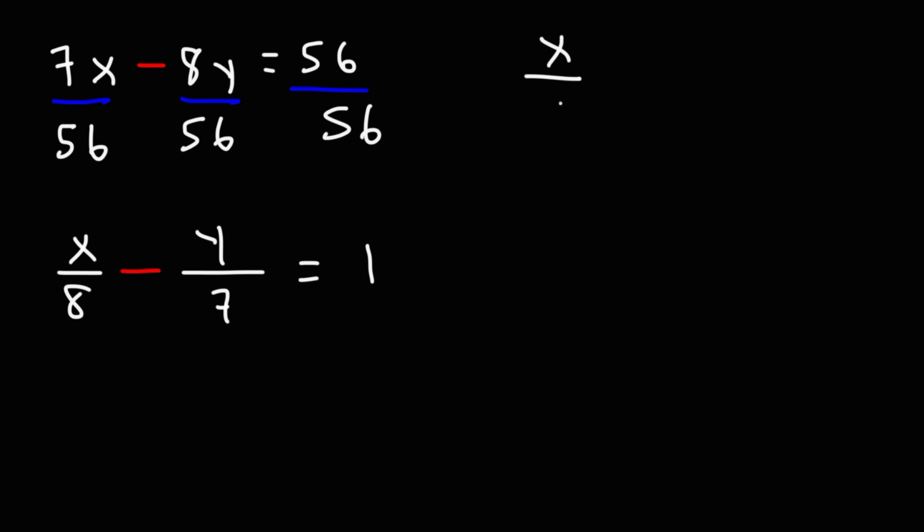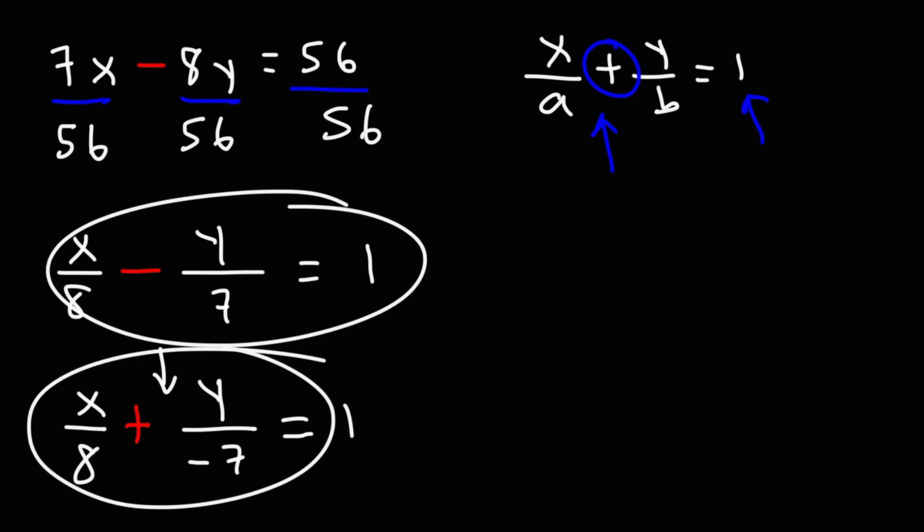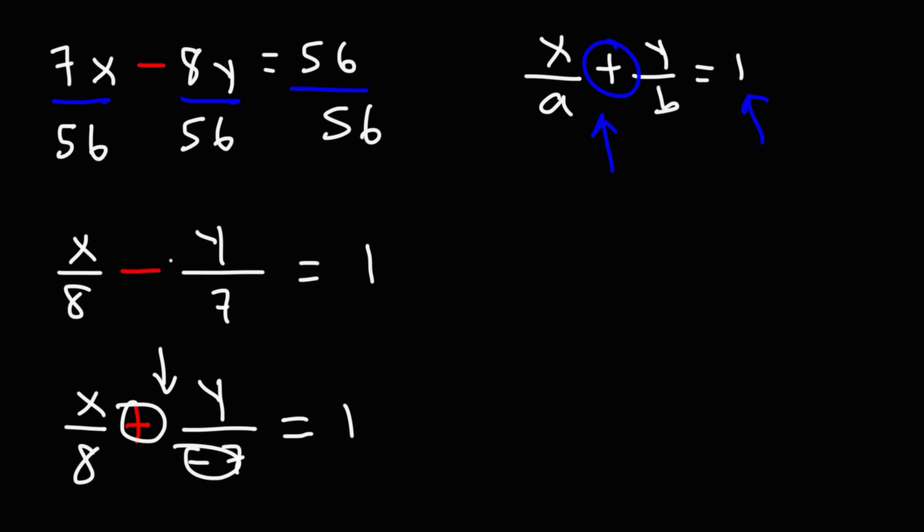Now, here is the intercept form of the linear equation. Notice that in order for this to work, we need to have a positive sign here, in addition to the 1. What we have is a negative sign. So I'm going to adjust this equation. This is x over 8 plus y over negative 7. So the only thing I've done is I move the negative sign. I've pushed it to the 7, which will make this positive. These two equations are equivalent. A positive sign times a negative sign is still a negative sign. But now, it's in this format. So what we can see is b is negative 7.